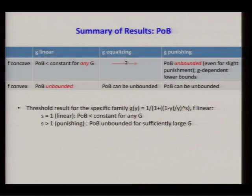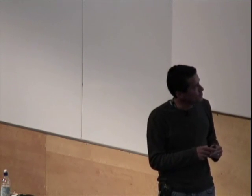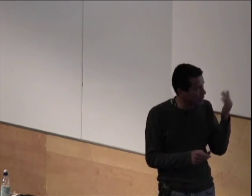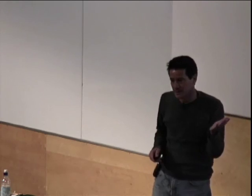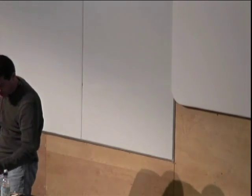Concretely, if we let the contagion function be in the Tullock contest family and let F be linear, the price of budgets is bounded by some constant. But if it's even slightly punishing — S = 1 plus epsilon — then you have unbounded price of budgets.